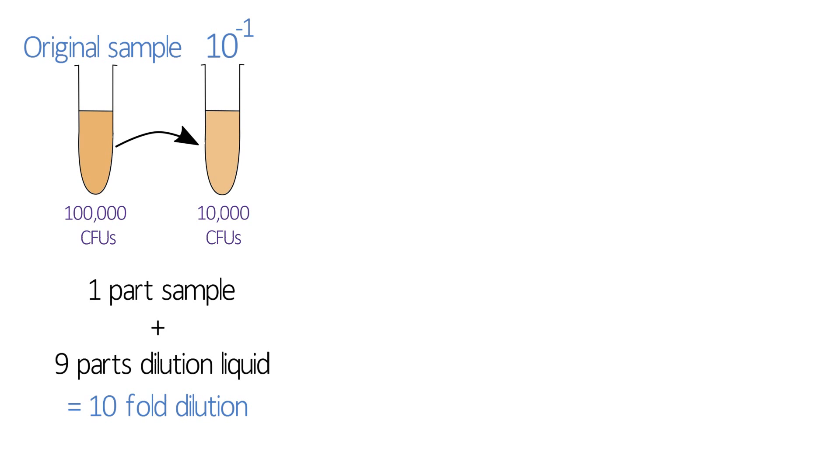Ten to the minus one means exactly the same thing as one divided by ten, but biologists usually express dilutions in the exponential notation, so make sure you're happy with this. In our case, we'll take 0.1 ml of the sample and add it to 0.9 ml of sterile nutrient broth, and this is our first dilution.